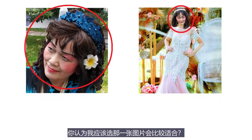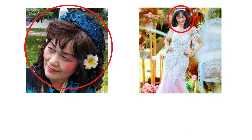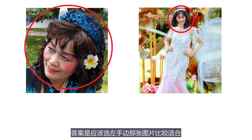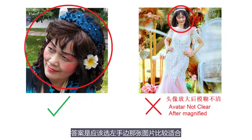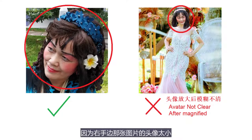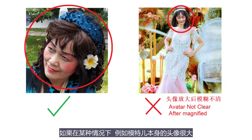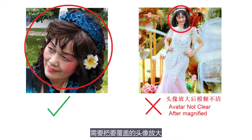我这里有两张图片，现在我要把我的头像摘取出来，覆盖到模特儿的背景图层上。假设两张图片的解像度都是一样，你认为我应该选哪一张图片会比较适合？答案是应该选左手边那张图片比较适合，因为右手边那张图片的头像太小。如果在某种情况下，例如模特儿本身的头像很大，需要把要覆盖的头像放大，那么放大之后就变得模糊不清了。